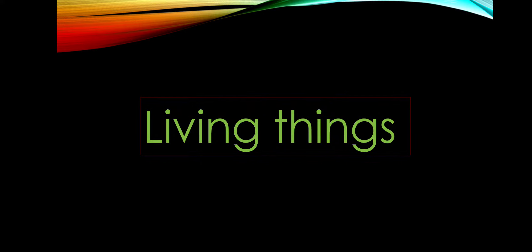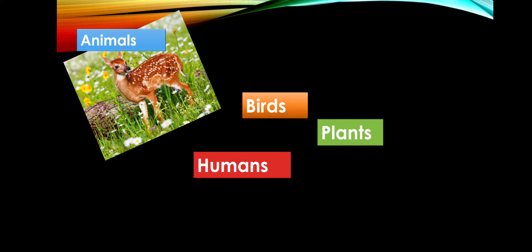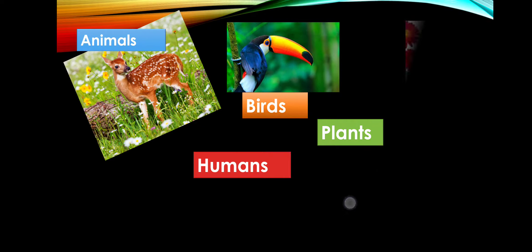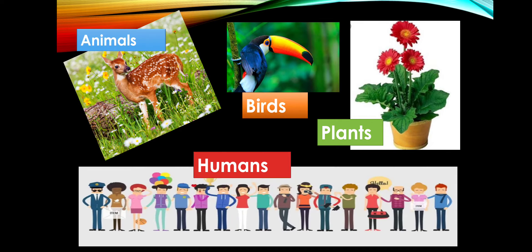First let's move towards living things. These are some examples of living things: animals, birds, plants, humans. When you see all these things, you will find that there are some similarities between these. Let us find out what are living things and what are its characteristics.